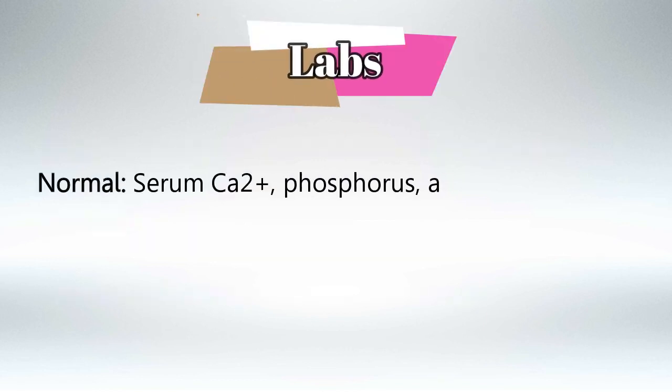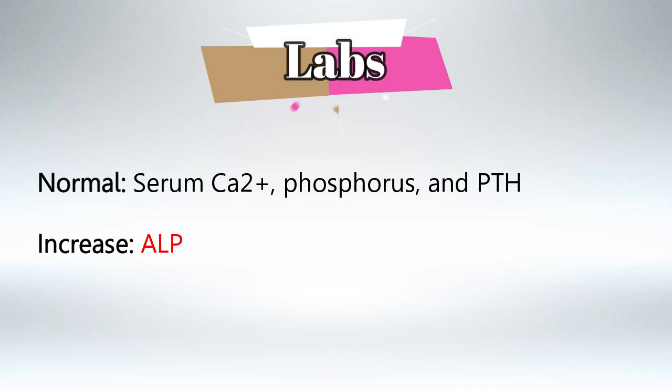In labs we're going to find normal serum calcium, phosphate, and parathyroid hormone — the only thing that is increased is alkaline phosphatase of the bone. That's everything — hopefully I made this easier for you, see you guys later.